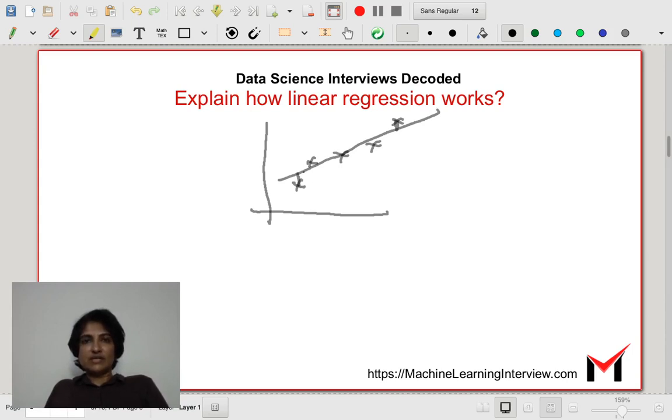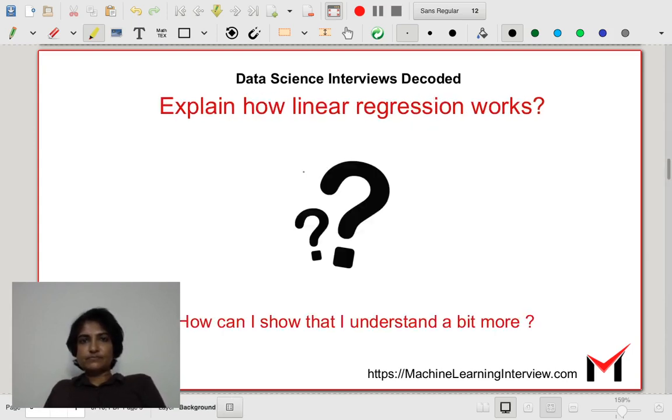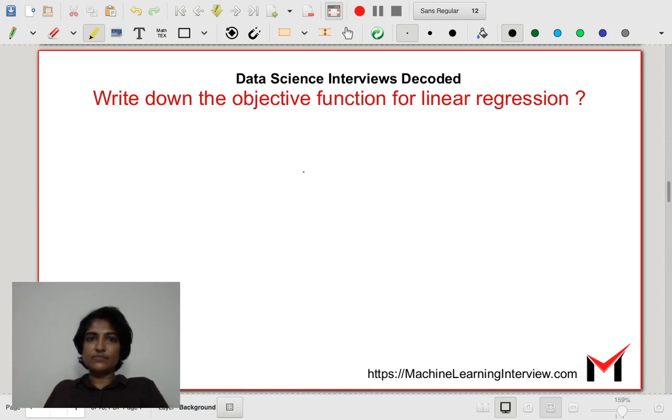So this is a basic answer. How can I show that I understand a bit more? Typically, it would make sense to actually just write down the objective function as well. Write down the objective function for linear regression.